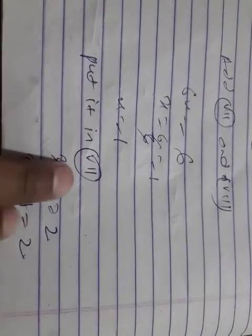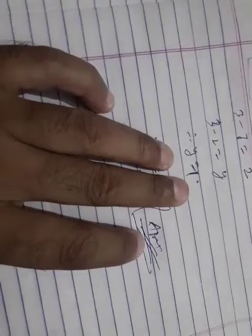Putting the value of x in equation number 7, we get the value of y. So we get x is equal to 1 and y is equal to 1.